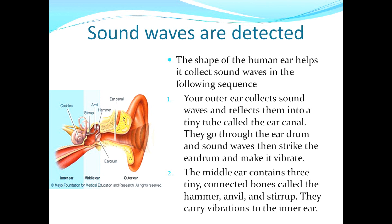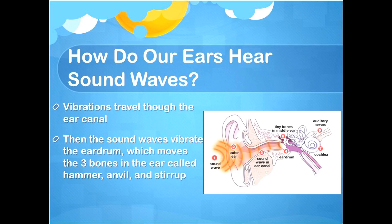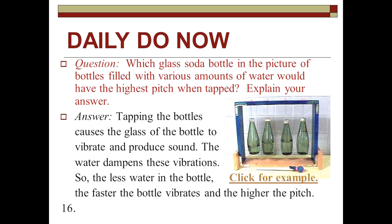The middle ear contains three tiny connected bones called a hammer, anvil, and stirrup. They carry vibrations to the inner ear. How do your ears hear sound waves? Vibration travels through the ear canal, then the sound waves vibrate the eardrum, which moves the three bones in the ear — hammer, anvil, and stirrup.